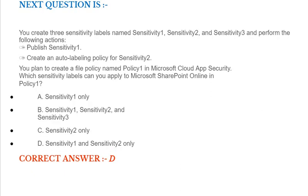Next question: You create three sensitivity labels named Sensitivity 1, Sensitivity 2, and Sensitivity 3 and perform the following actions: first, publish Sensitivity 1; second, create an auto-labeling policy for Sensitivity 2. You plan to create a file policy named Policy 1 in Microsoft Cloud App Security. Which sensitivity label options can you apply to Microsoft SharePoint Online in Policy 1? Option A: Sensitivity 1 only. Option B: Sensitivity 1, Sensitivity 2, and Sensitivity 3. Option C: Sensitivity 2 only. Option D: Sensitivity 1 and Sensitivity 2 only. Correct answer is Option D.